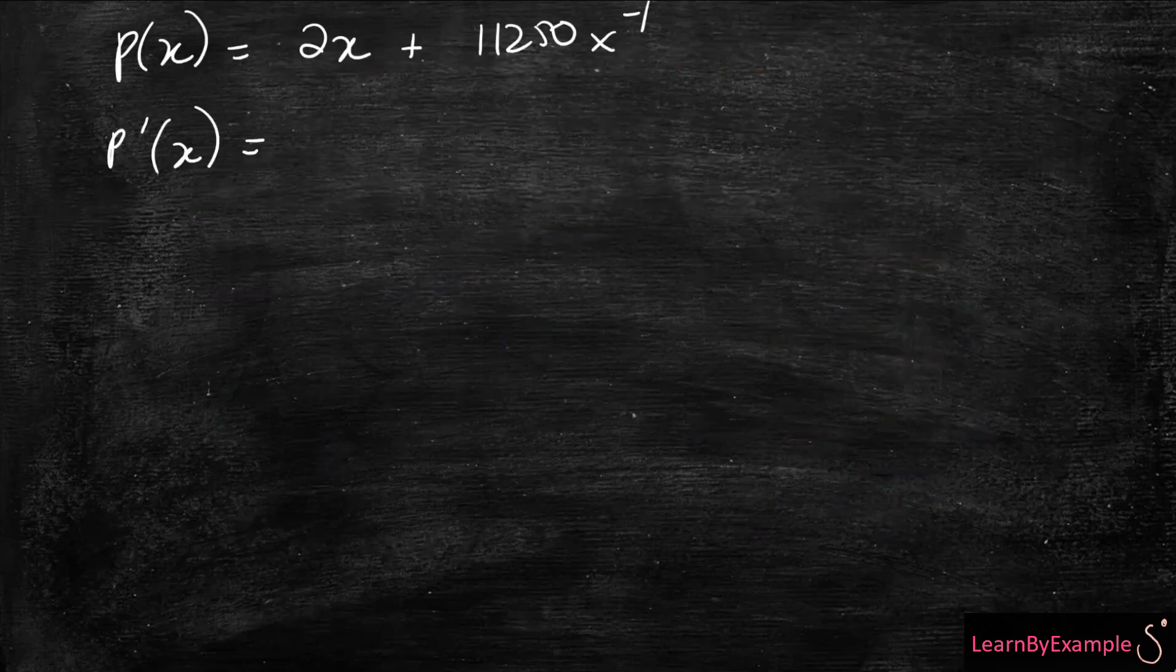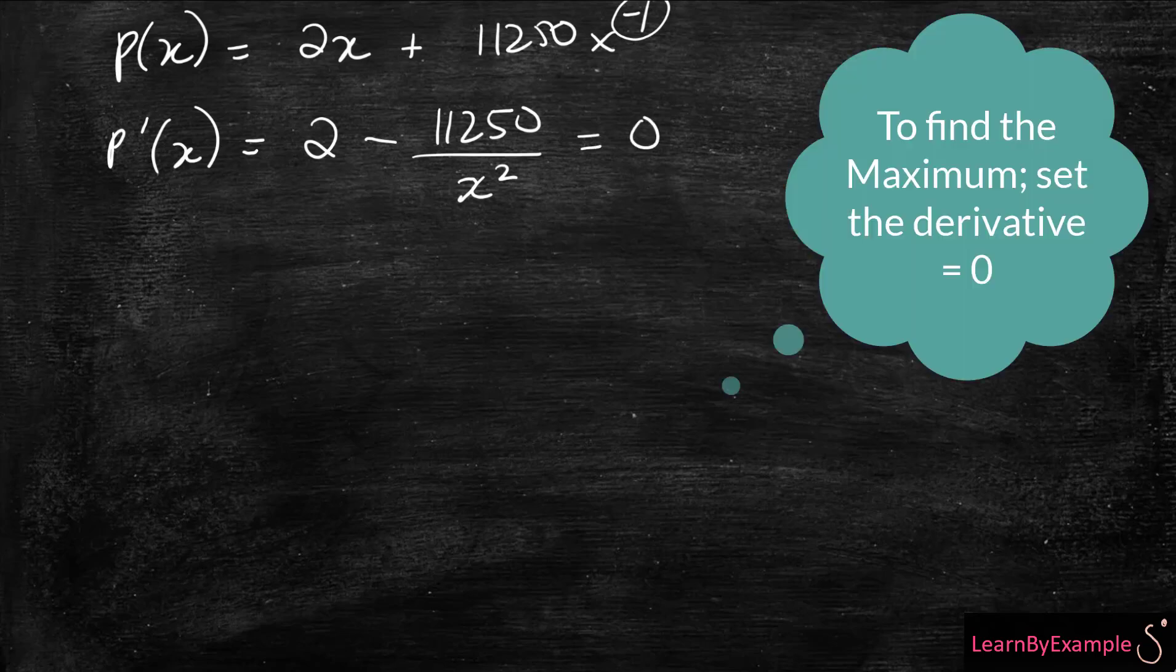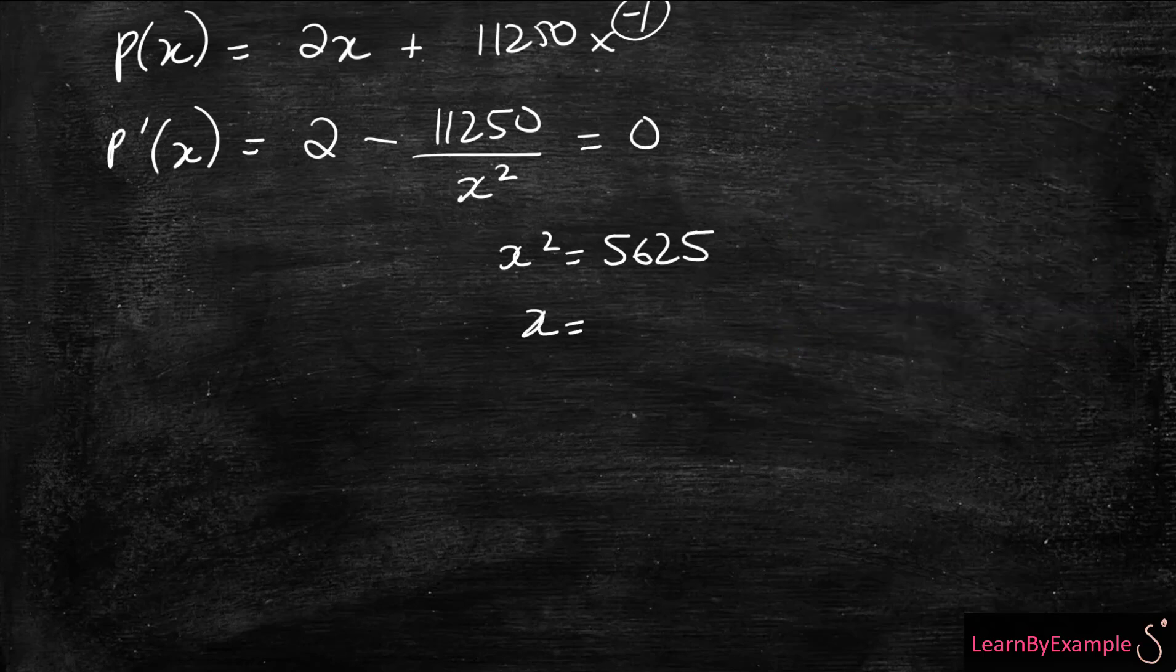If you do that, then your X goes away in that case, and in this case that becomes 11,250, it's negative because you're going to multiply by -1, and then over X squared. Now if we set that equal to zero, you're going to be left with X squared equals 5,625, and if you take the square root, X equals 75.